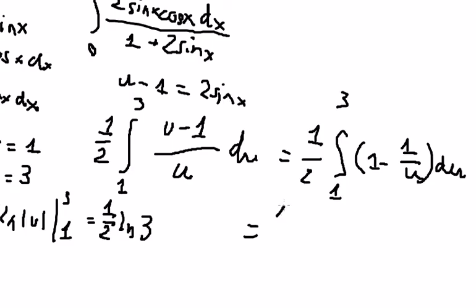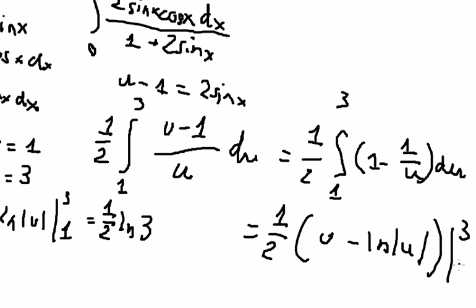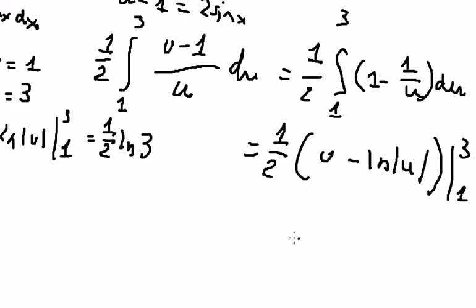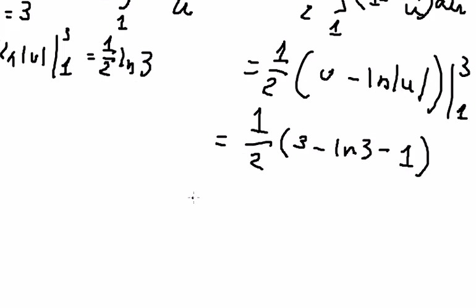So we got 1 over 2 integral from 1 to 3 of 1 minus 1 over u, which is u minus ln of the absolute value of u. So we got 1 over 2 times (1 over 3 minus ln 3 minus 1). So 1 over 3 minus 1, we got 1 over 2 times (2 minus ln 3).